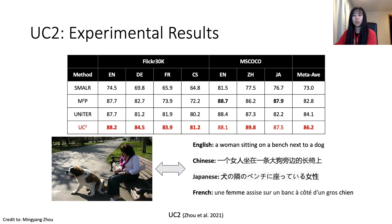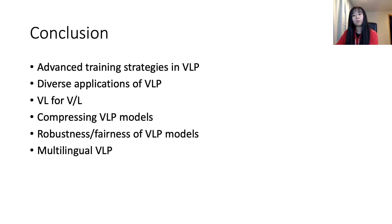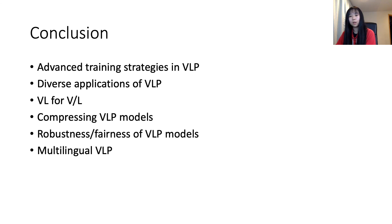UC2 has demonstrated obvious advantage over the baselines across different languages, including M3P. In this 40-minute tour of more advanced topics in VLP, we have visited: advanced training strategies, diverse applications, VL for V and VL for L, model compression, robustness and fairness of VLP models, and multilingual VLP. These are all promising research directions worth further investigation.